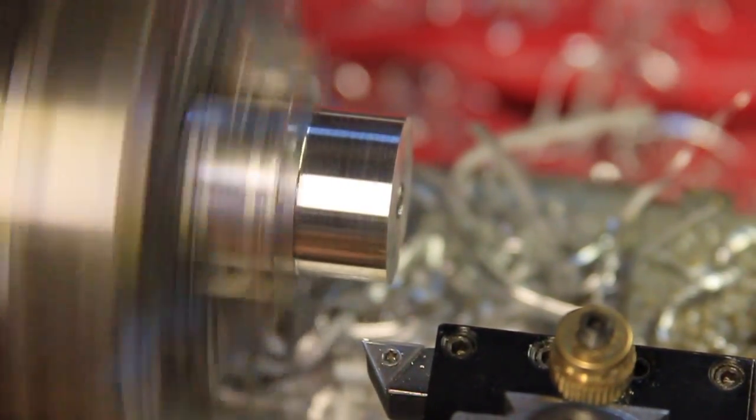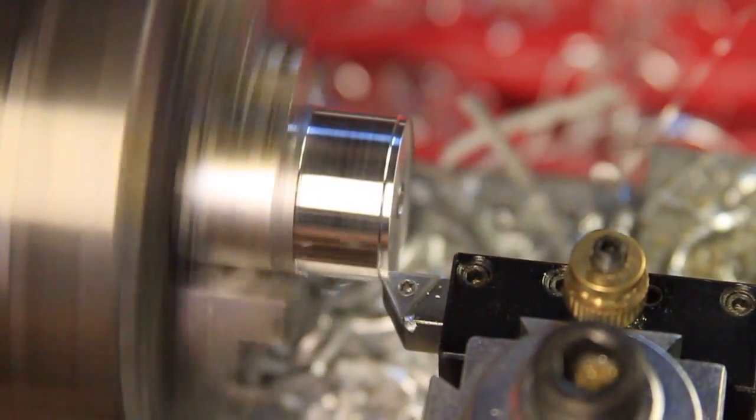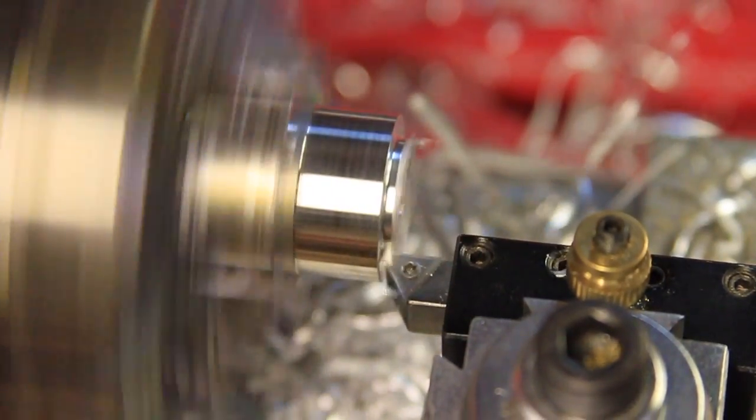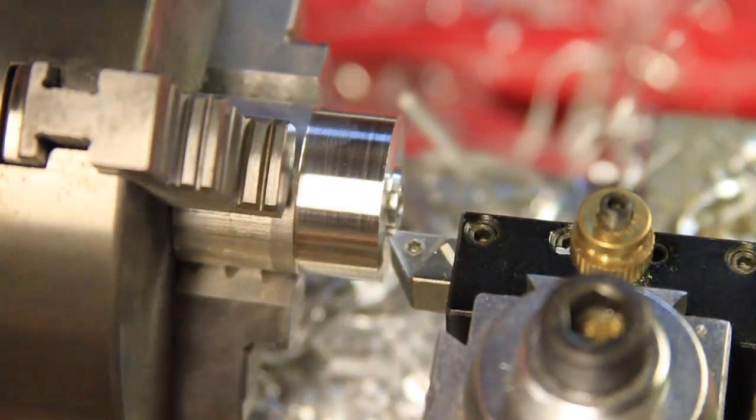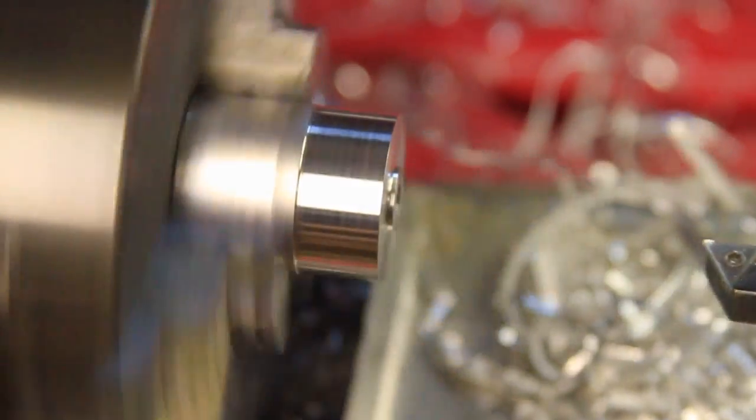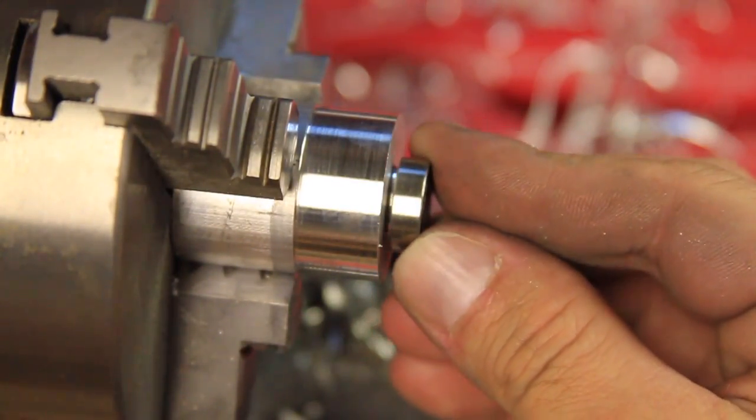It also needs to have a small step that is smaller than the larger bearing race and larger than the smaller one. This small step and the head of the cap screw are going to sandwich the smaller race of the bearing and hold it in place, which in turn will also hold the first piece that the flag will be mounted to.